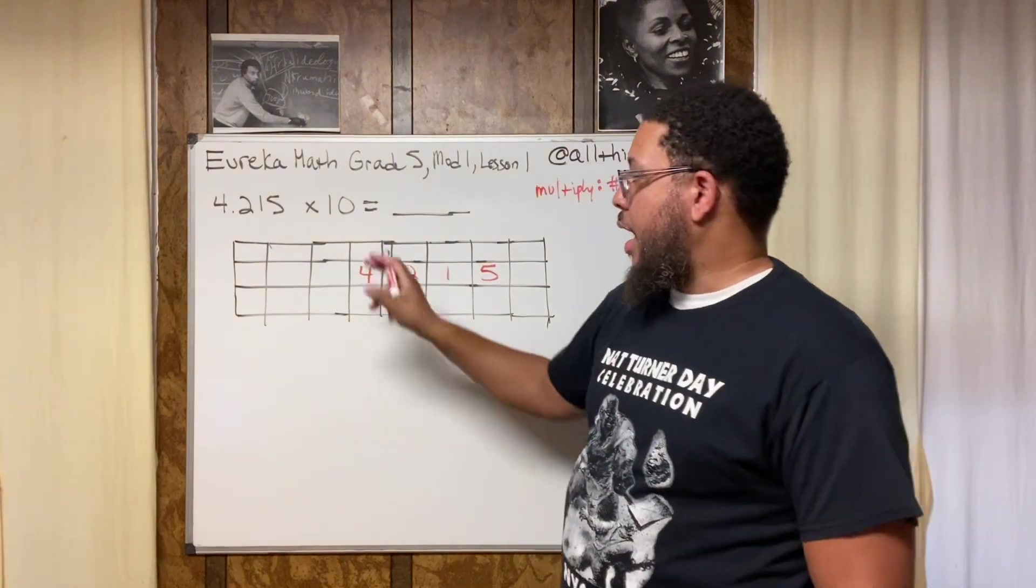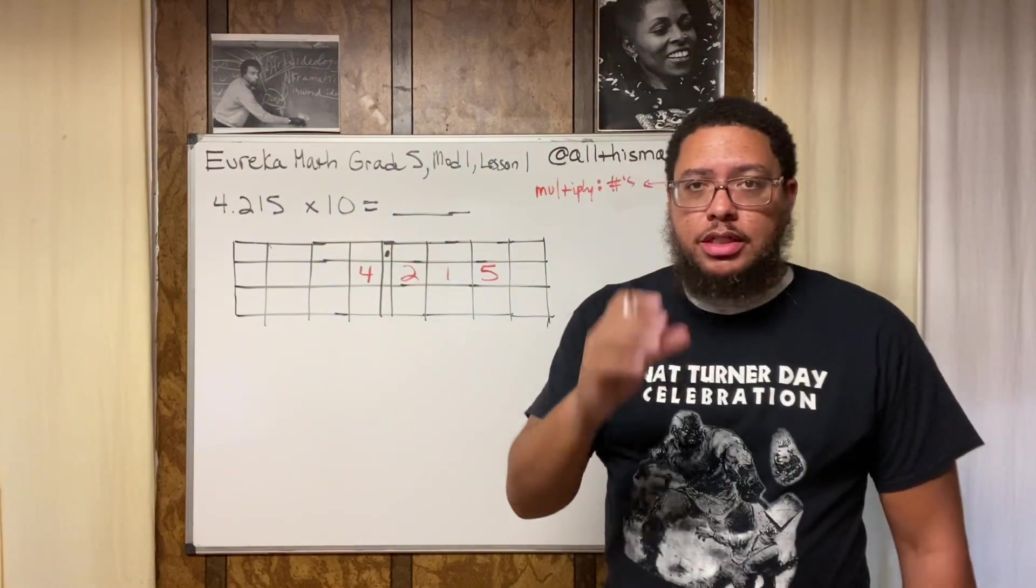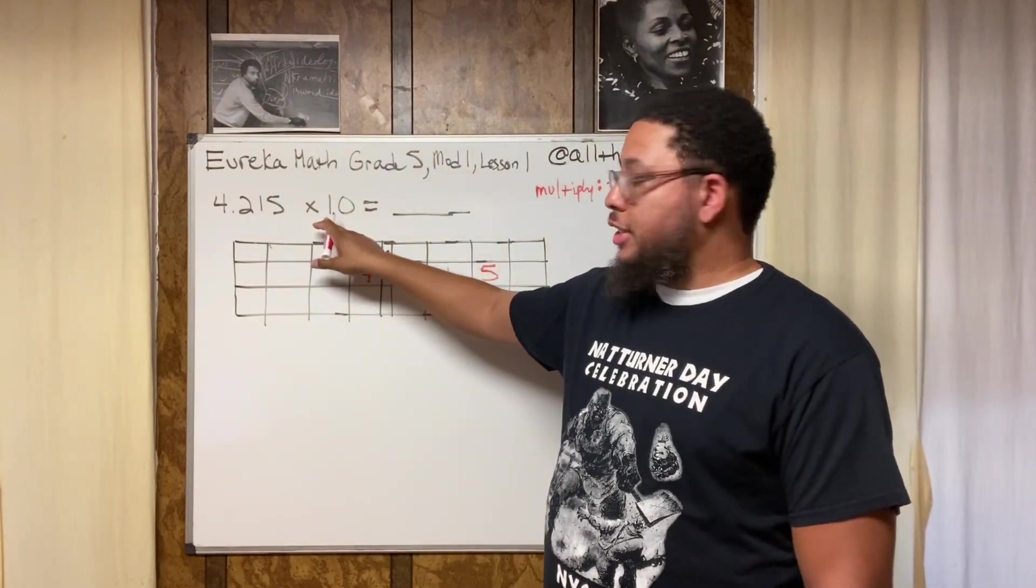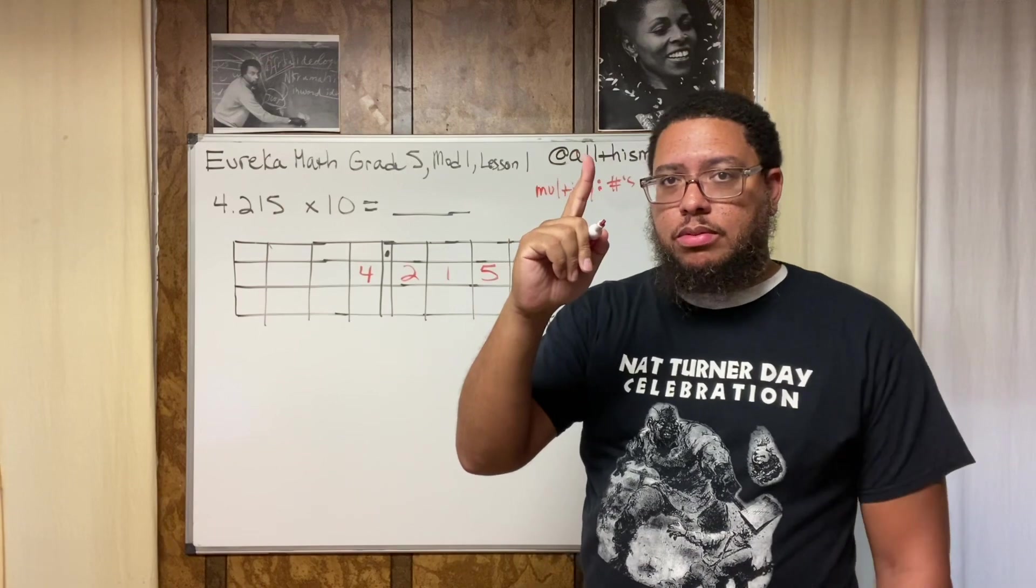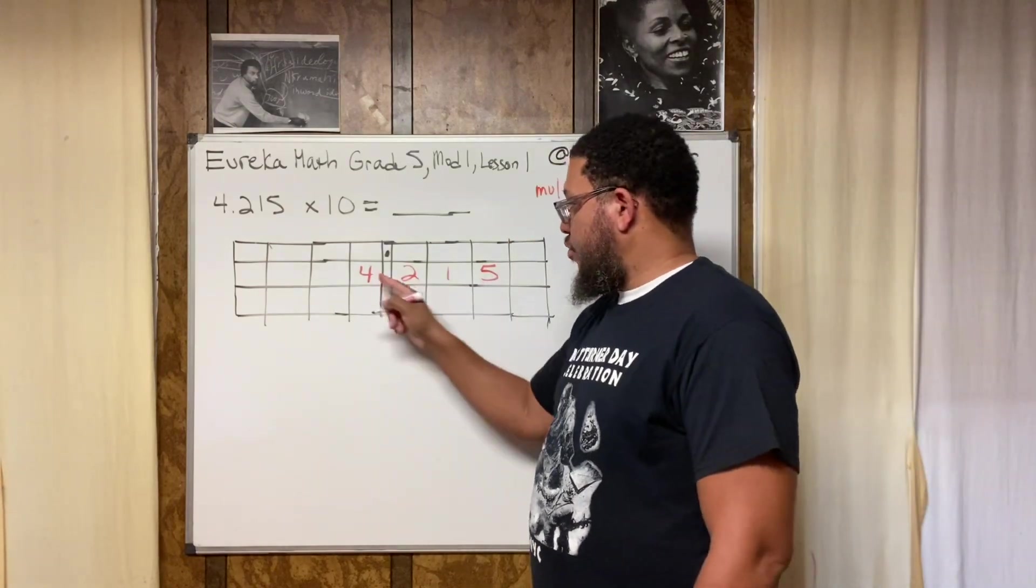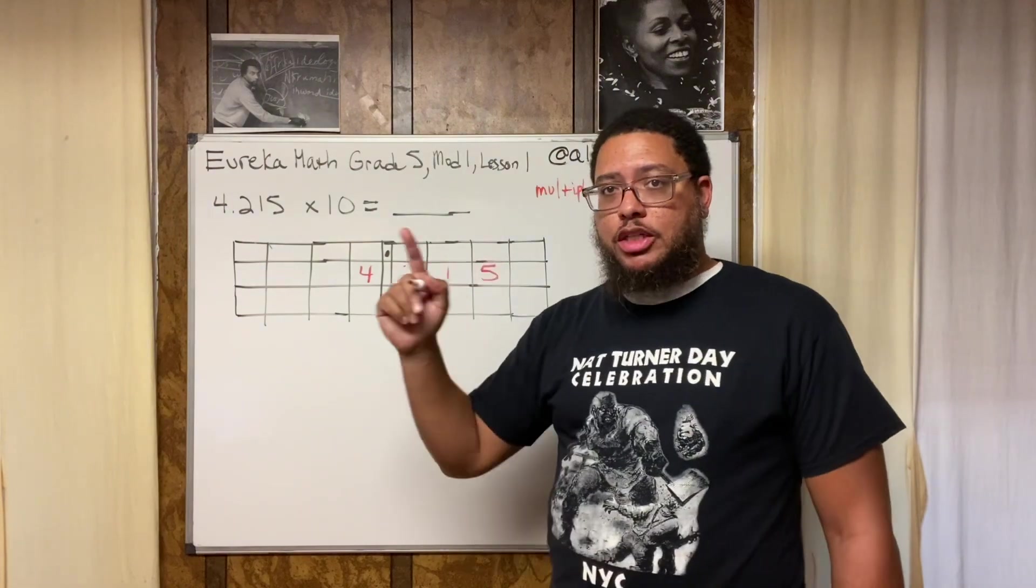Now how many spaces? This is how you know how many spaces to move. How many zeros are in this number? This is a 10. 10 has one zero. So therefore you're going to move the numbers, every digit—4, 2, 1, and 5—one space to the left.